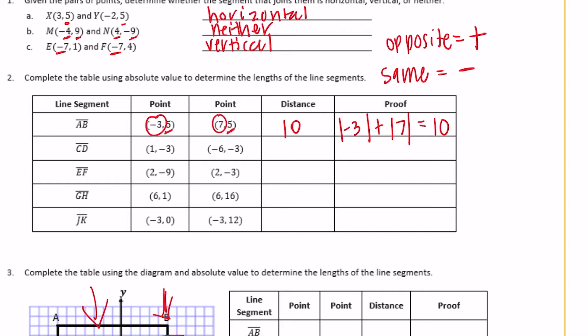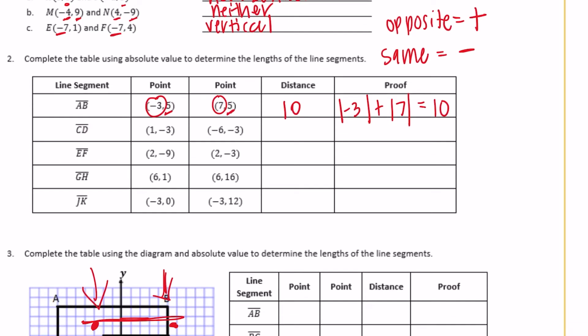CD is at 1, negative 3 and negative 6, negative 3. They differ in their x-values — one is negative and one is positive, so they're on opposite sides of 0. The absolute value of 1 plus the absolute value of negative 6 equals 1 plus 6, which is 7. The distance is 7.